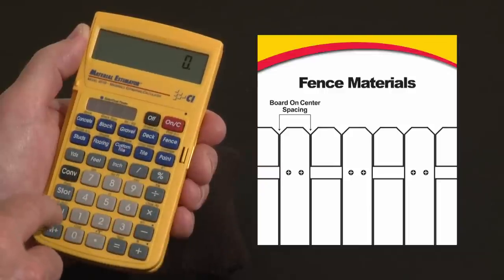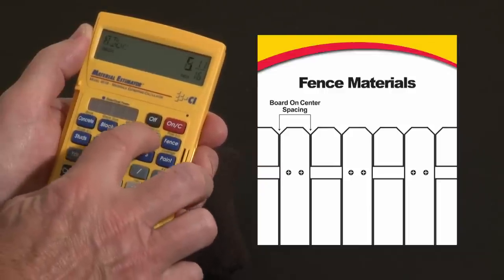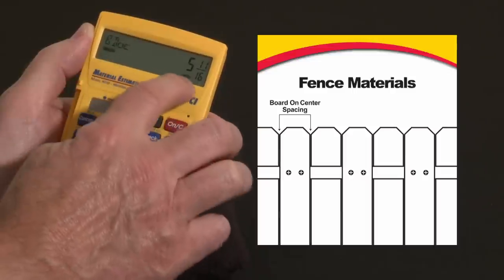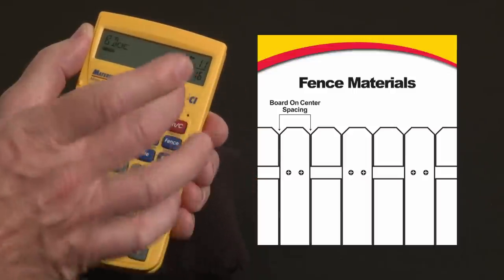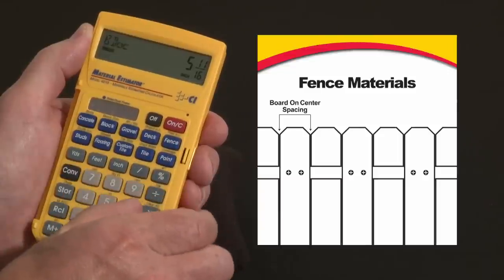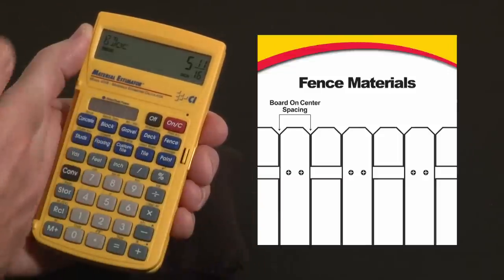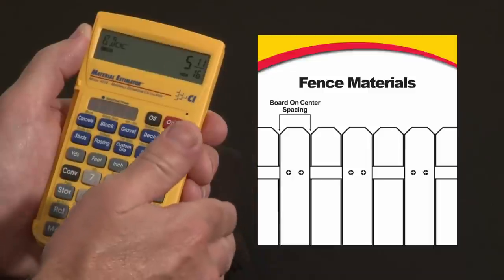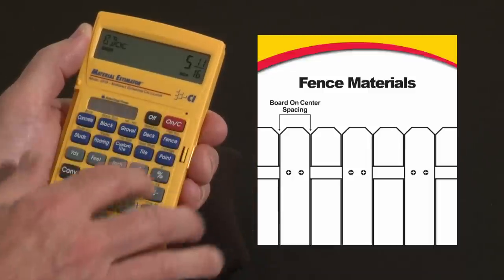Next is the fence board width, or board on center. Board on center is five and eleven sixteenths. The board on center constitutes not only the width of the board but also the gap between it and the next board. So it's really the front edge of one board to the front edge of the second board.